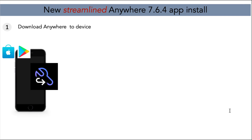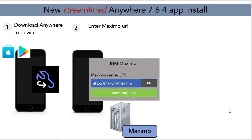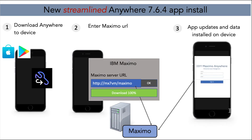Moving forward, things are much easier. We now download the Anywhere application from the Apple and Google Play Store. After doing this, we're not entering a middleware URL — we're entering the Maximo URL directly, because the device communicates directly with Maximo to pull information, app updates, and the data it needs to function on the device. Streamlined communication, streamlined serviceability.